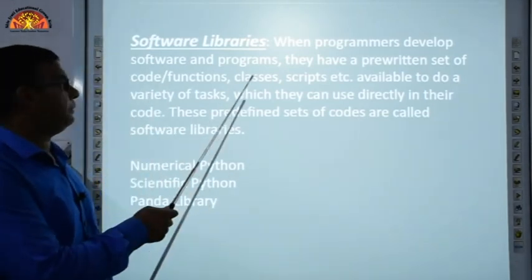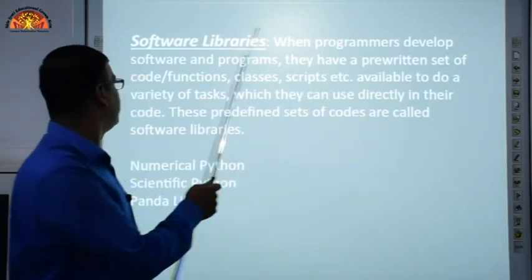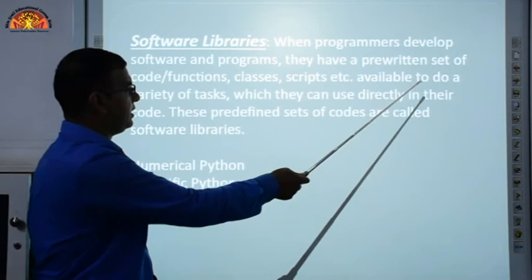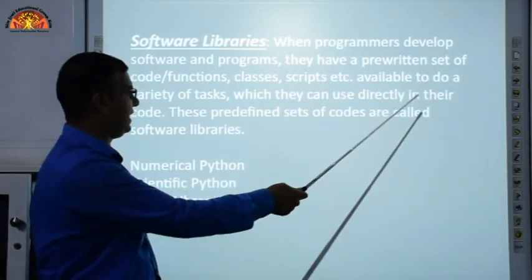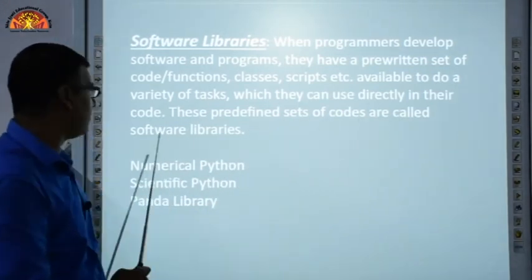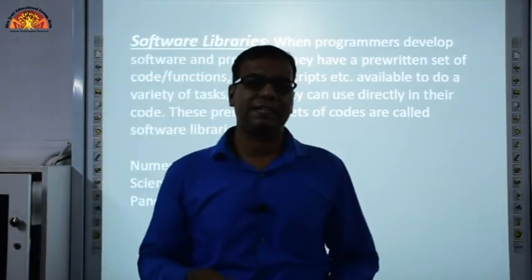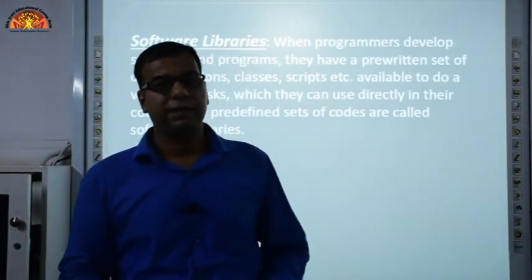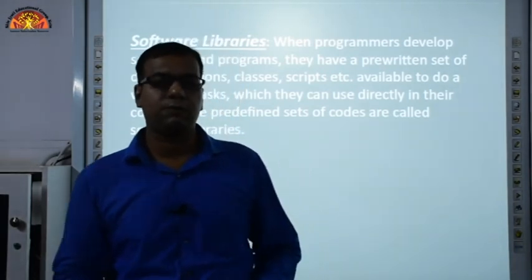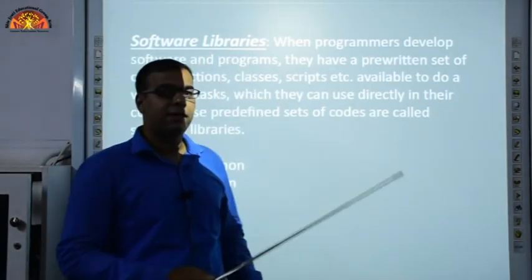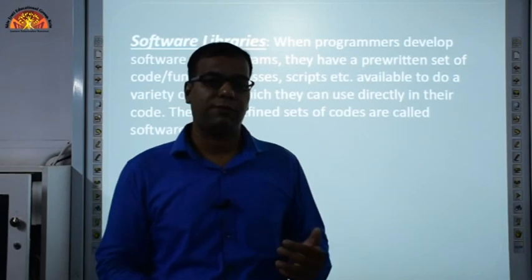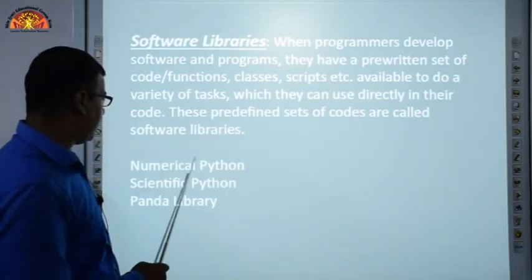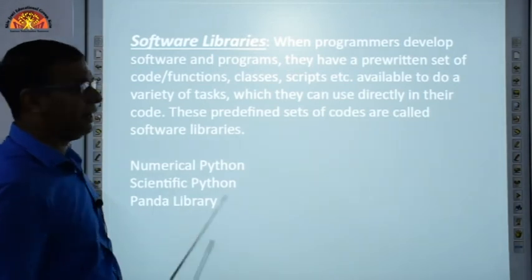Next, software libraries. When programmers develop software, they have a predefined set of code, functions, classes, and scripts available to perform a variety of tasks, which they can use directly in their code. These predefined sets of code are called software libraries. For example, if you need input/output functions, you can include them from libraries. Examples of some libraries are Python and Pandas.